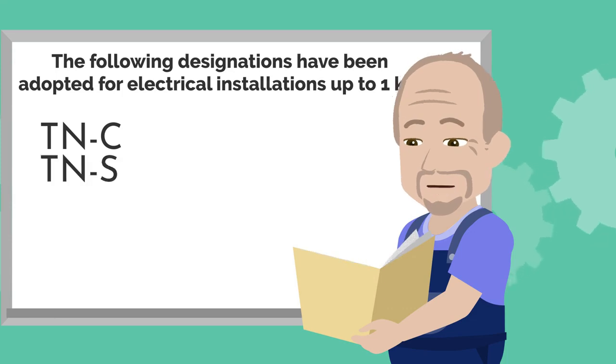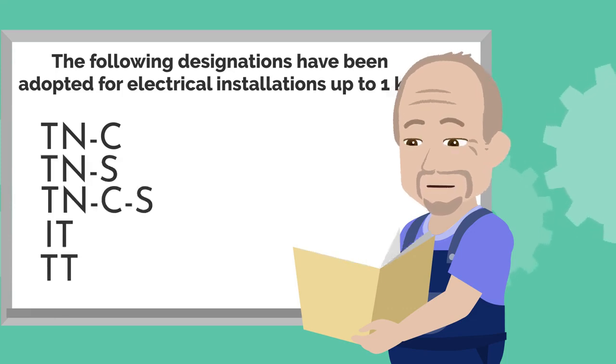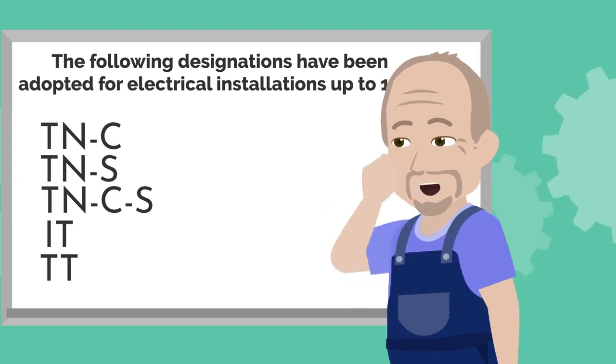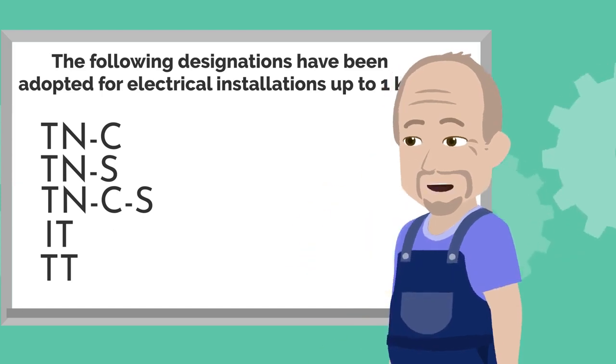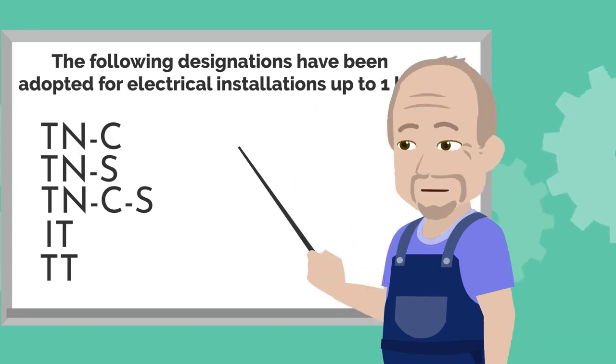TNC, TNS, TNCS, IT, and TT. The first letters indicate grounding parameters of the power supply source, which is the transformer station supplying the alternate current to the consumer.